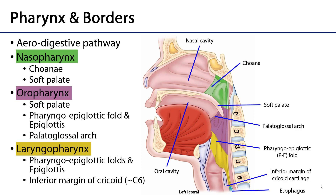The nasopharynx is contiguous with the two sides of the nasal cavities. As air flows in through the nose and nasal cavity, it passes through a bony passageway known as the choana — plural choanae, because there are two of them, one for each side — and this air passes into the nasopharynx. Drawing a line posteriorly through the soft palate marks the border between the nasopharynx and the oropharynx inferior to it.